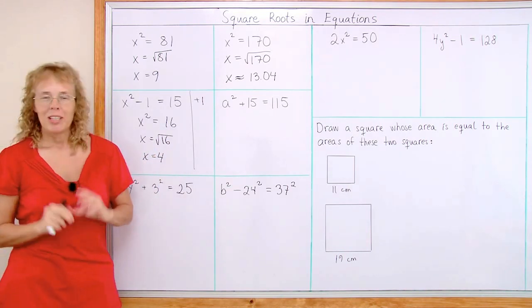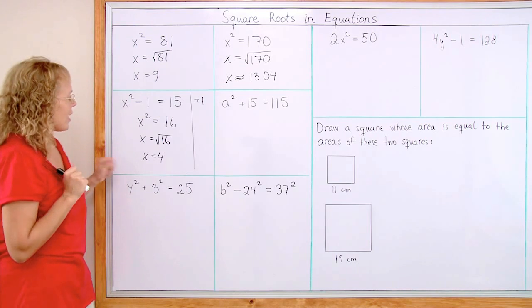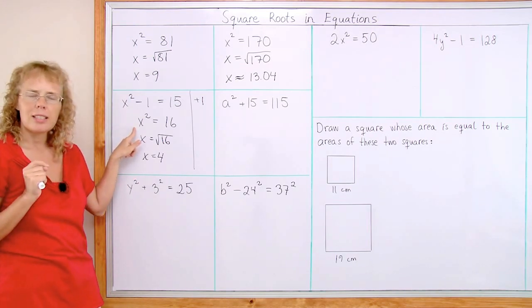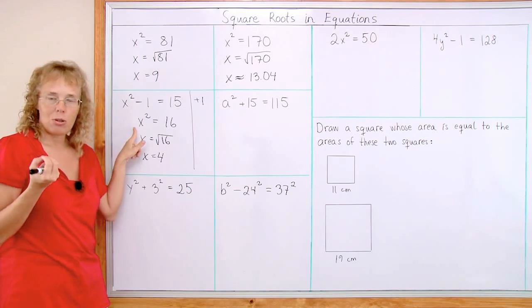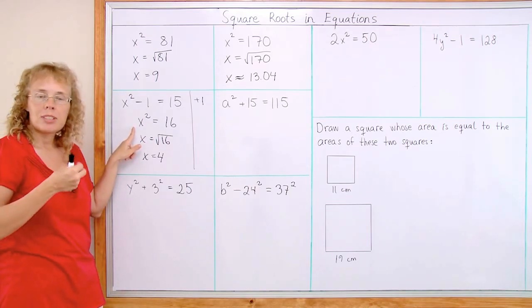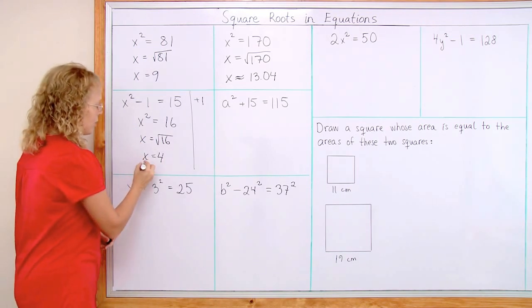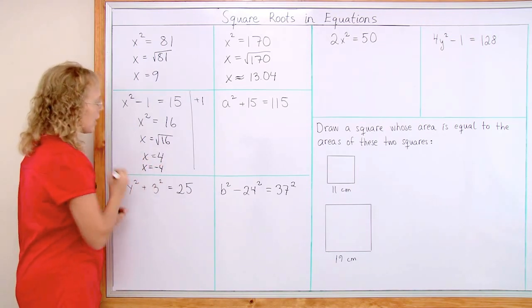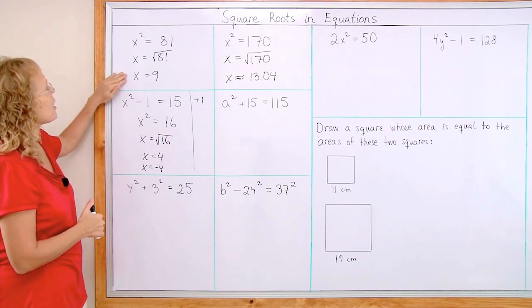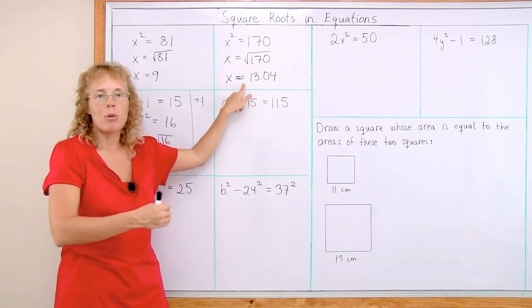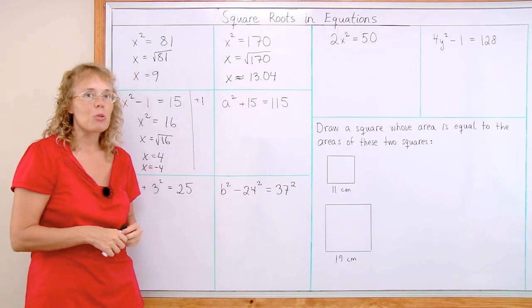Now, one little point. There actually is another solution to this equation here. x squared equals 16. Because also negative 4 would work. Because negative 4 times negative 4 would be 16 too. So actually there are two solutions. So similarly here, x equals negative 9 and x equals negative 13.04 are also solutions.